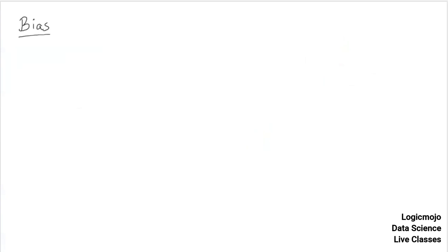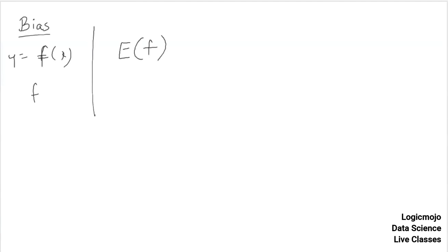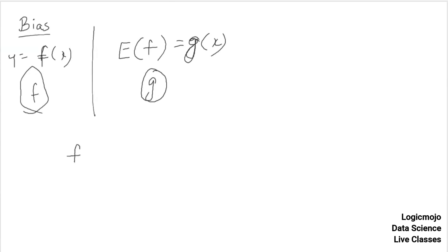Bias and variance are calculated based on what models we are training — multiple models. Let's say we are trying to estimate f, which is the original function f(x). We train multiple models and the best one is the expected value of f, which we call g(x). So the original formula is f and the model we have estimated is g. Bias is simply the difference between these two — original minus predicted.